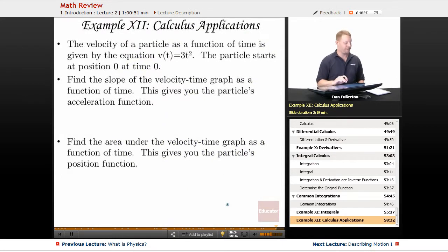Let's take a look at our last example for this lesson. The velocity of a particle as a function of time is given by the equation v(t)=3t². The particle starts at position 0 at time 0.